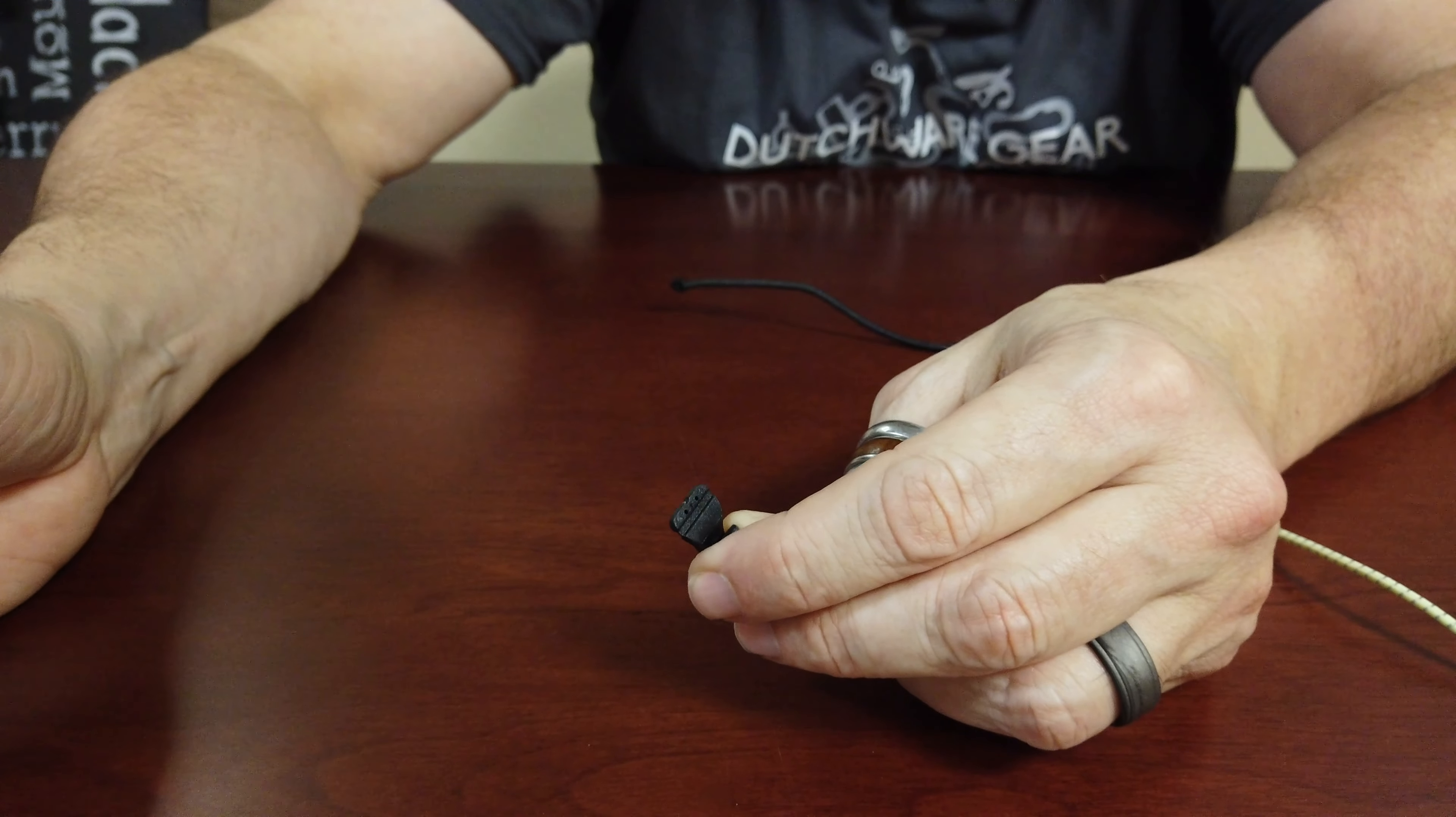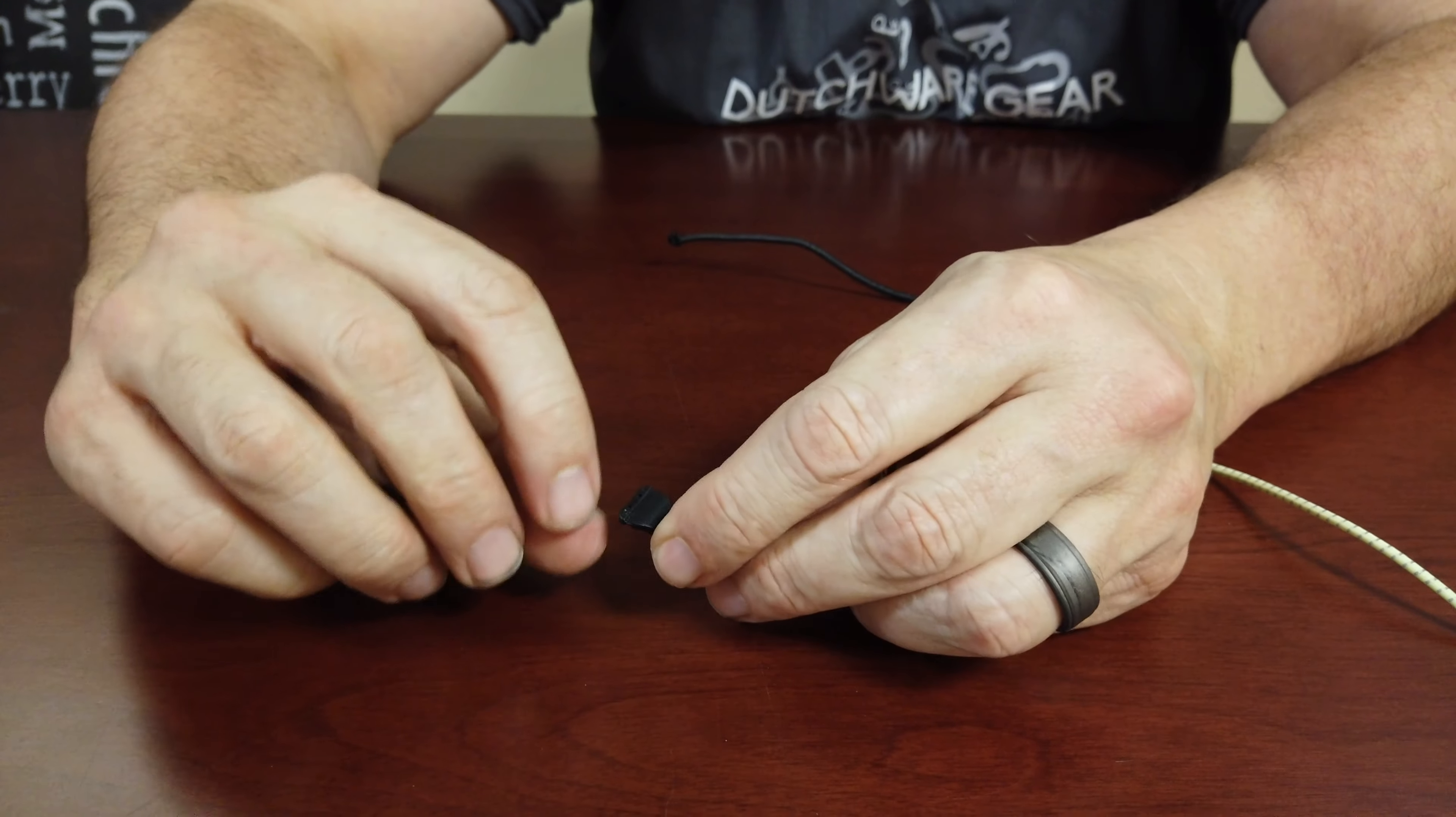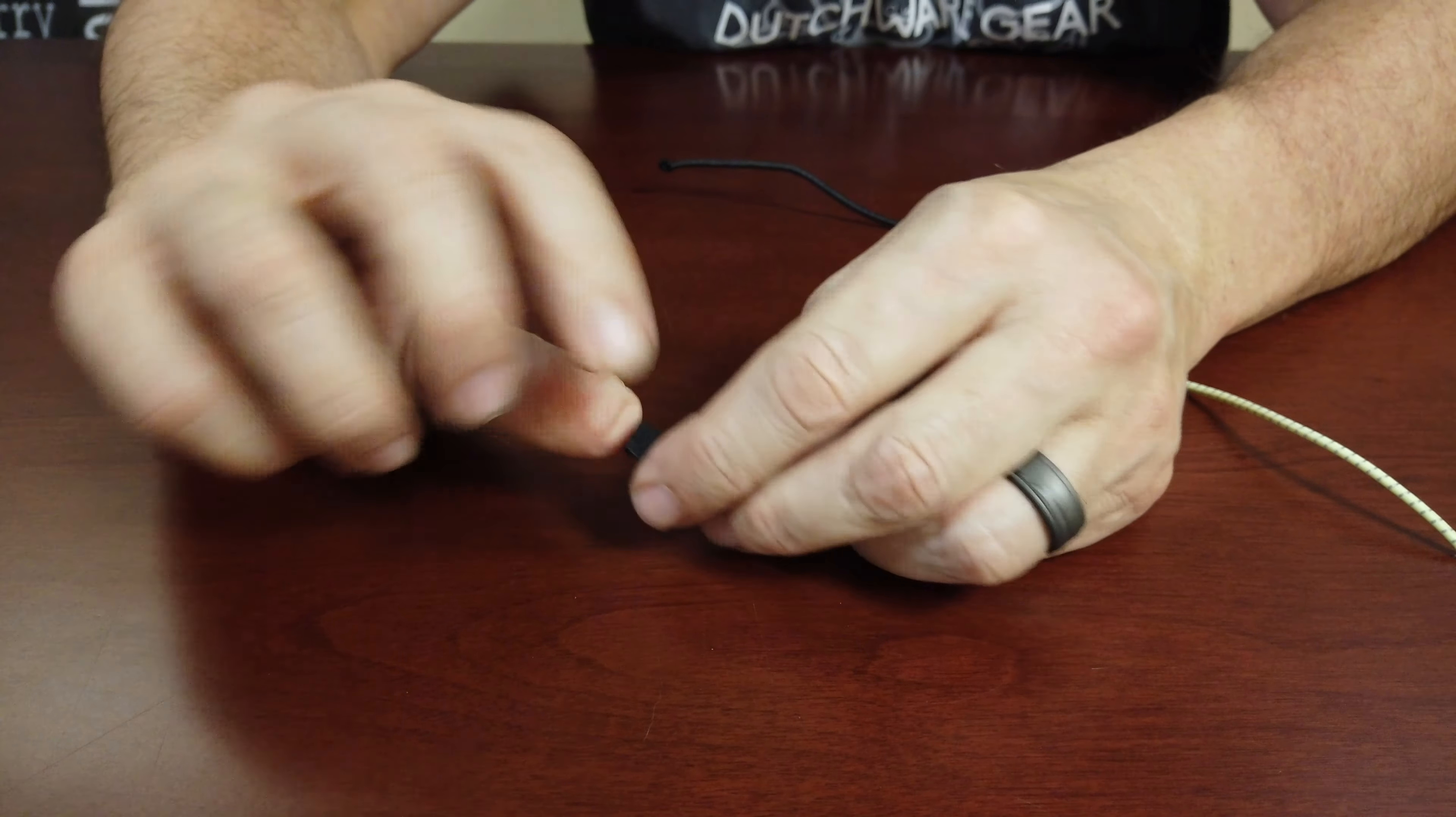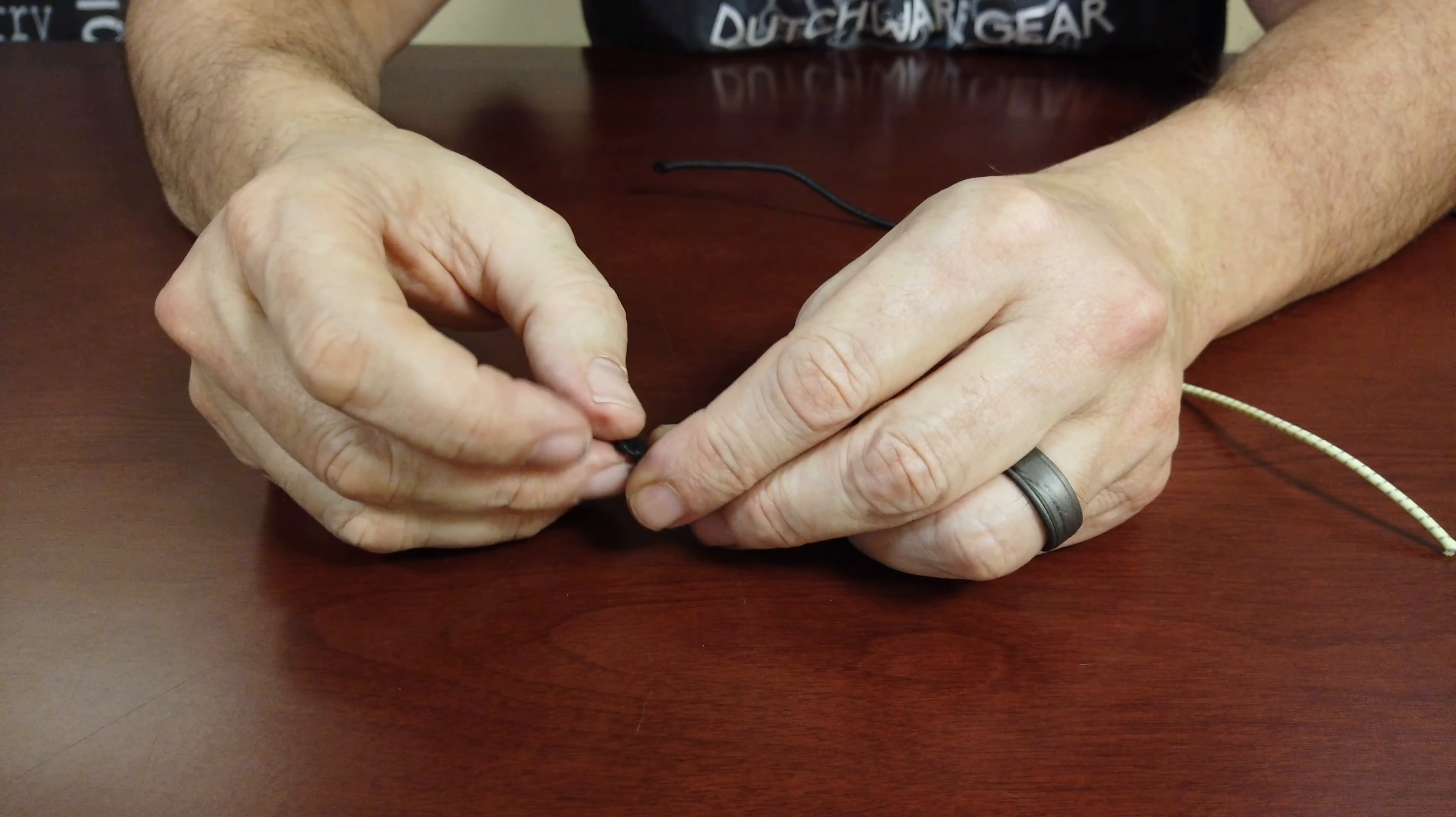So this is a sew-on version. You're actually going to be able to apply this. You could hand sew it or you can machine sew it. There is a thin spot right here.